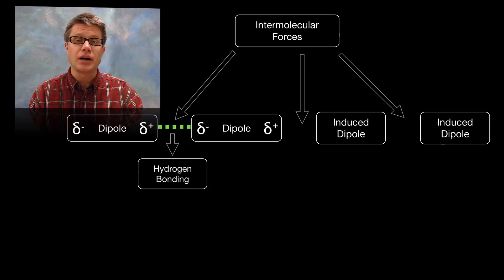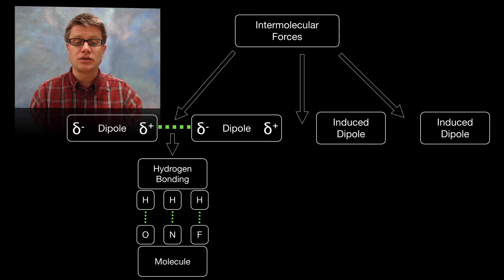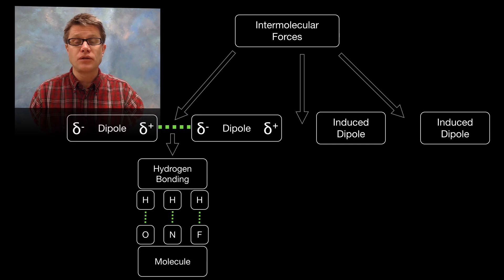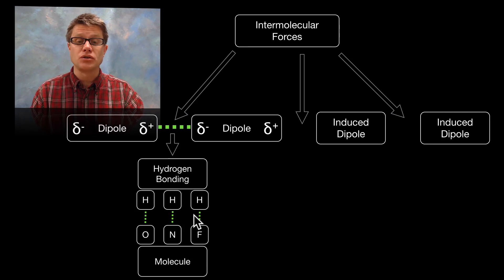An example of a dipole-dipole would be a hydrogen bond. What we're doing there is taking hydrogen atoms of one molecule and they're being attracted to oxygen, nitrogen, and fluorine atoms of another molecule. Those are both dipoles, so what we get is an attraction between those two. They're not of the same molecule — they're just holding those two molecules together.